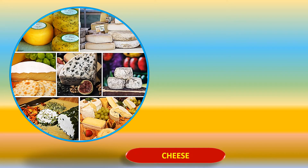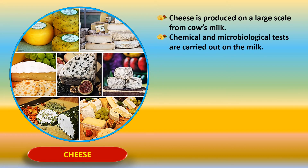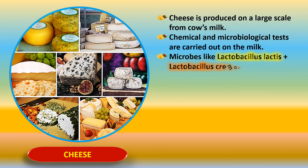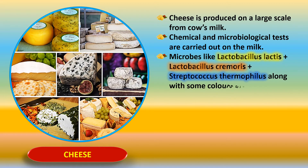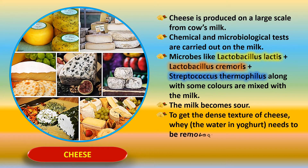After yogurt, we come to the production of cheese. Cheese is produced on a very large scale from cow's milk. Initially some chemical and microbiological tests are carried out on the milk. Then microbes like Lactobacillus lactis, Lactobacillus cremoris, and Streptococcus thermophilus, along with some colors, are mixed with this milk, and the milk becomes sour.